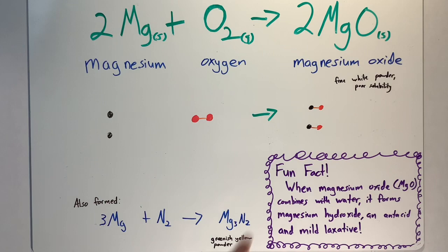Fun fact, when you combine magnesium oxide with water, it forms magnesium hydroxide, which is an antacid and a mild laxative.